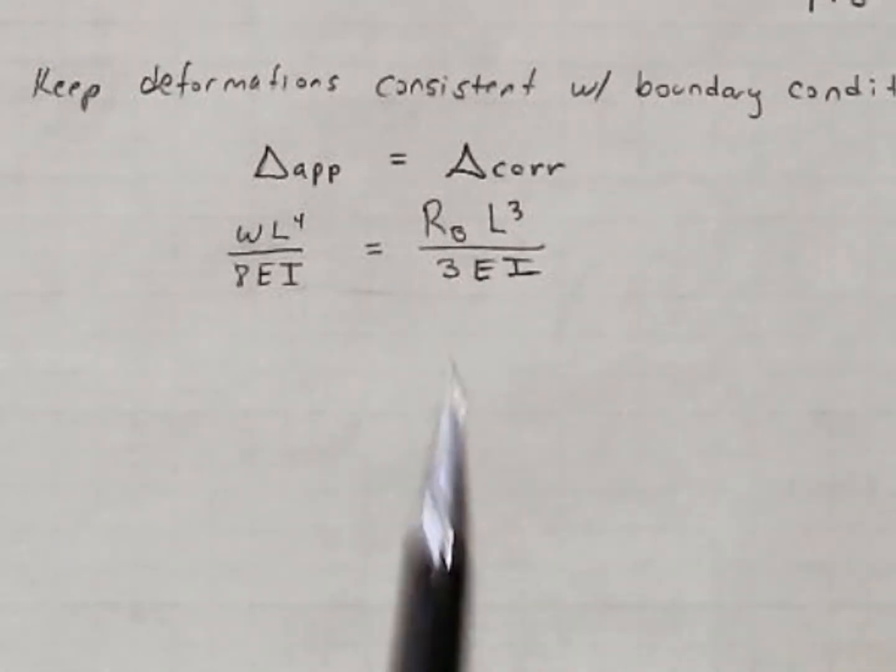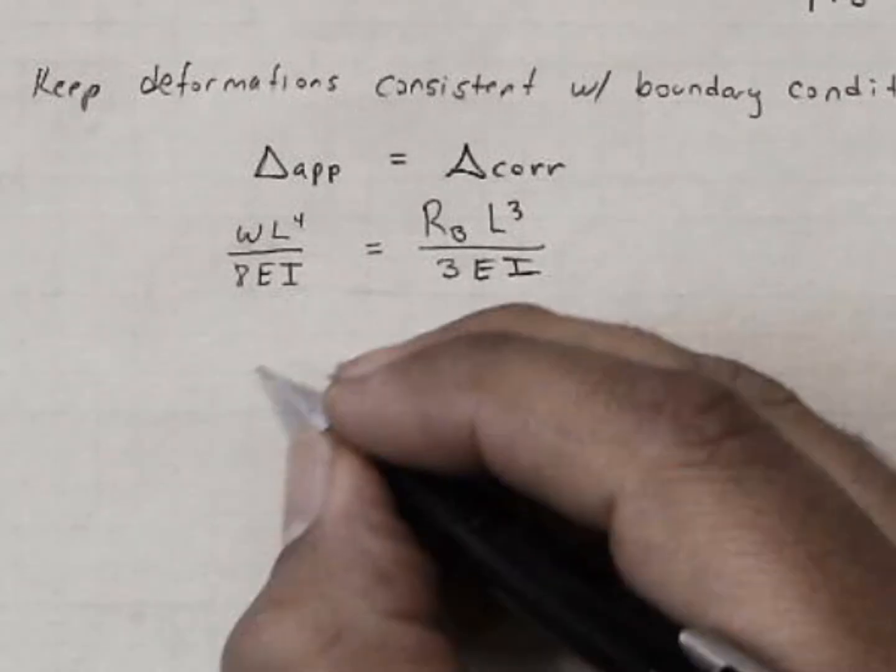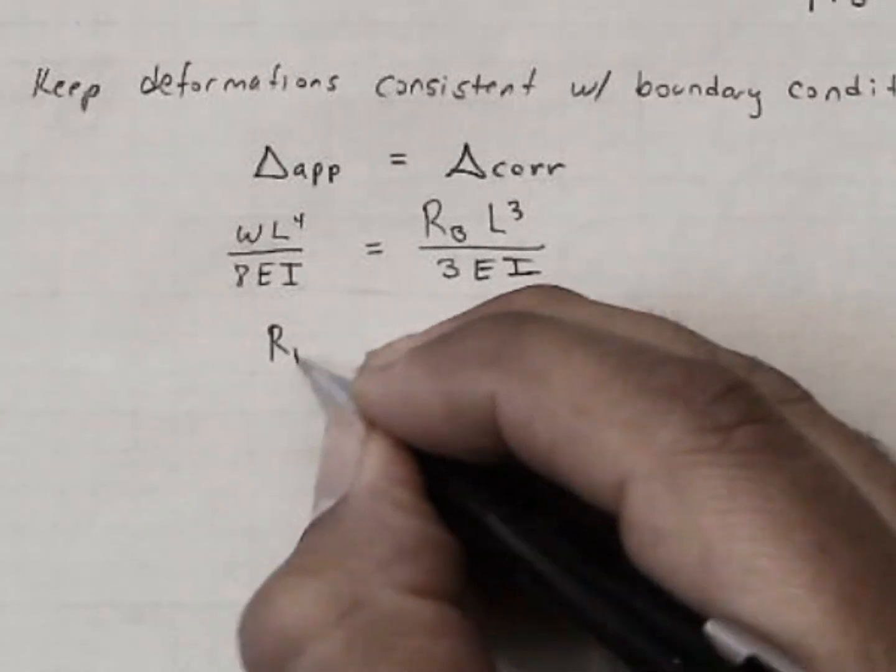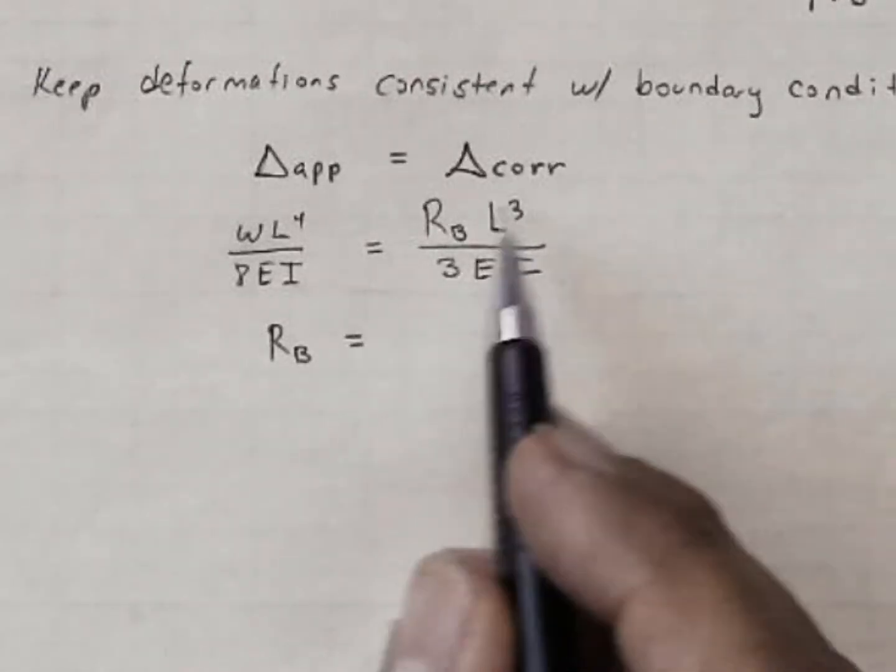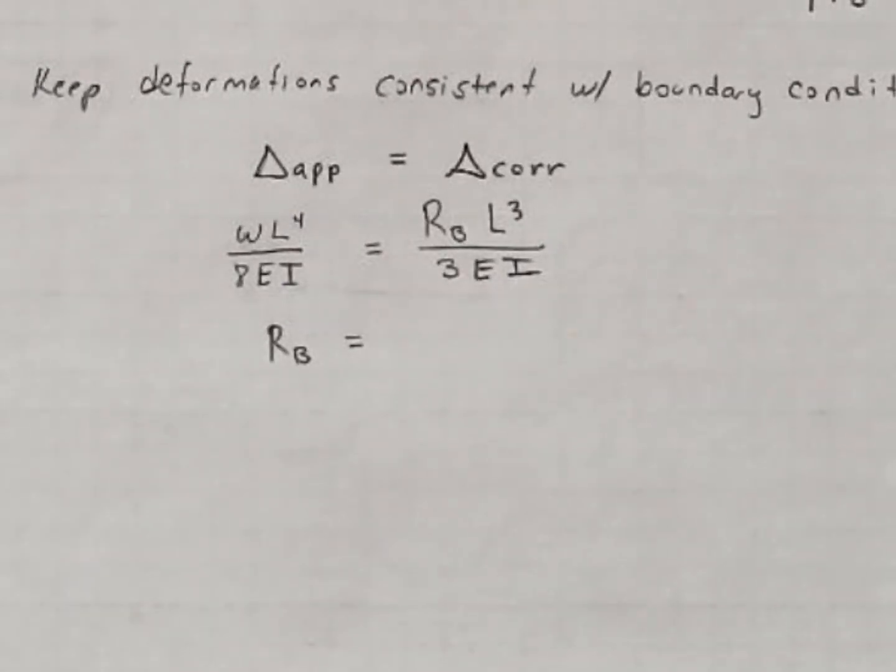As previously stated, the unknown value is the force, the redundant force. So we need to solve this algebraically for R sub B. The EIs cancel, 3 of these Ls cancel 3 of those. That leaves us WL over there.